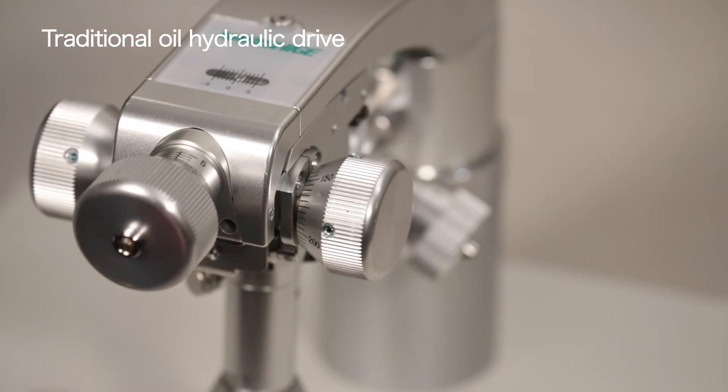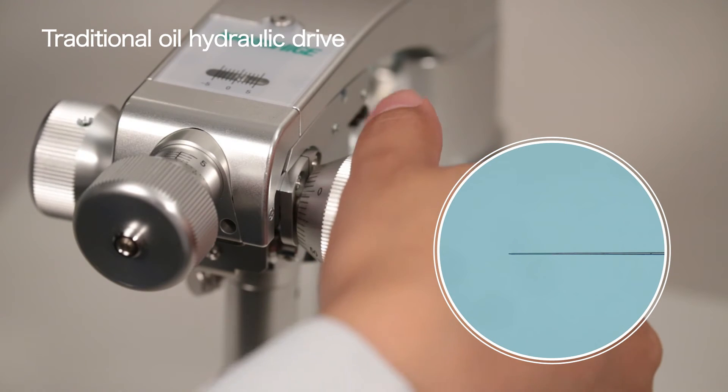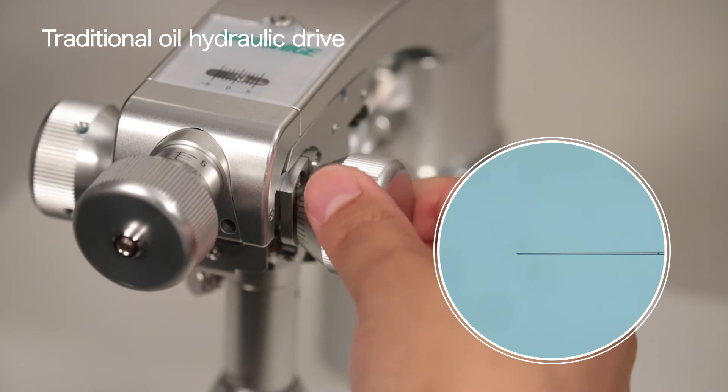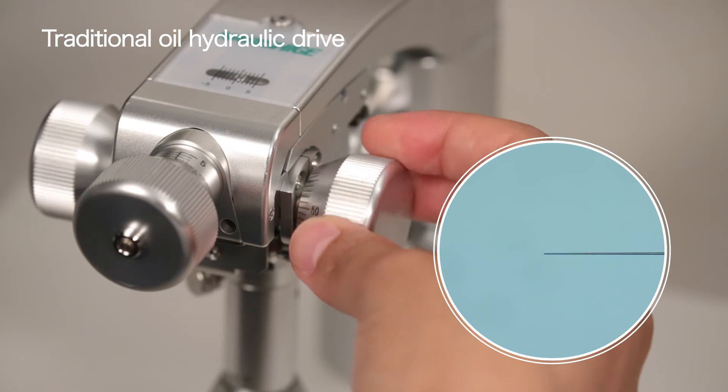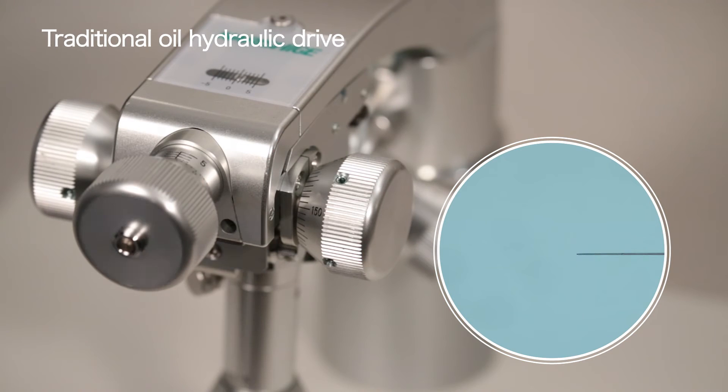The X-axis knob for precise straight line movement enables fine control for puncturing a fixed target. Only the Narishige oil hydraulic drive can perform both of these operations without switching.